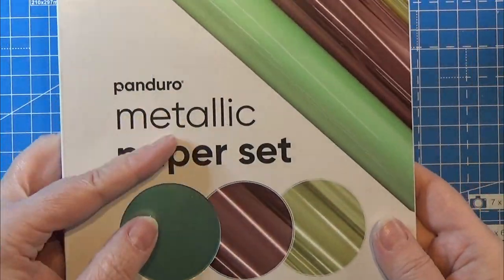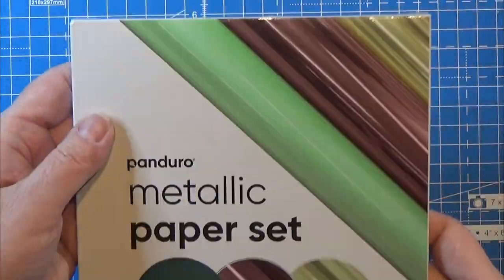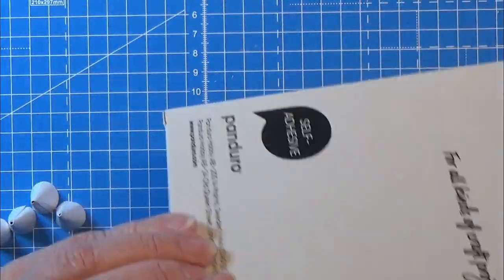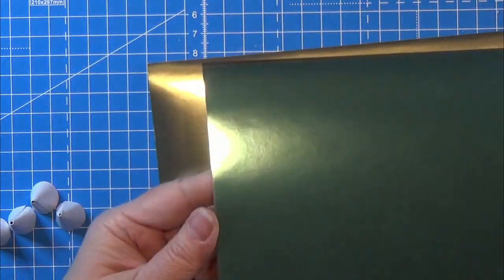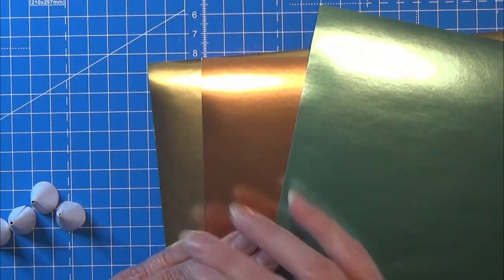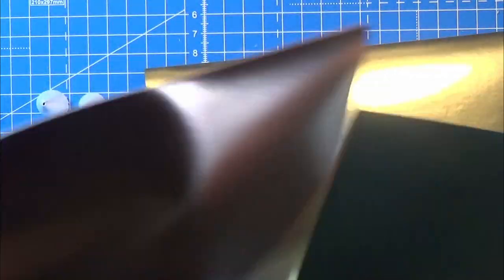I have these iridescent pipe cleaners and this metallic paper that is self-adhesive, and I'm going to use that to decorate these hats for a really pretty new year's hat.